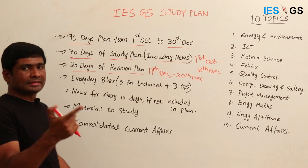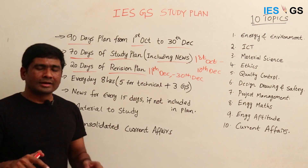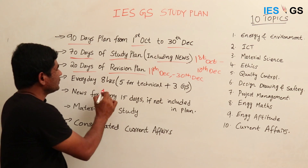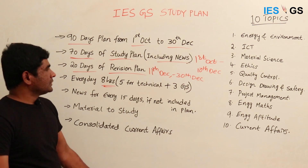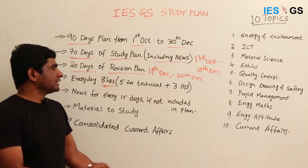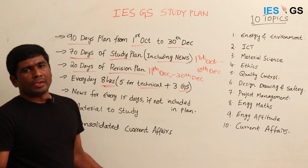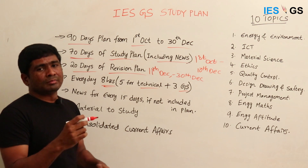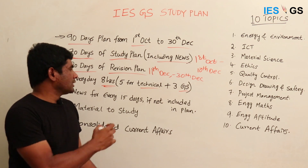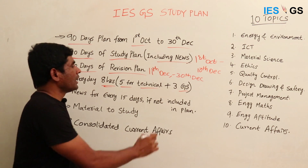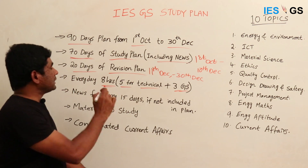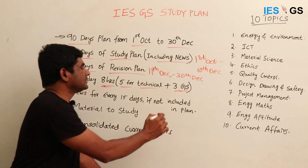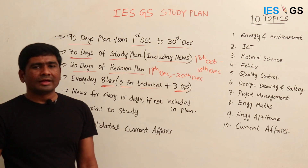We have dedicated a specific number of hours to each topic. A candidate seriously preparing for IES prelims will spend on average eight hours a day. Since there are two papers — technical and general studies — and the technical syllabus is much larger, we have allocated five hours for the technical paper and three hours for the GS paper.